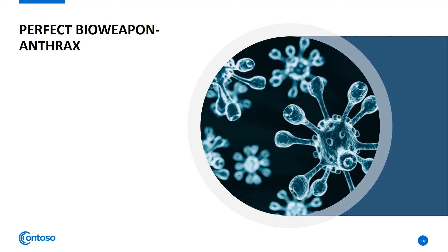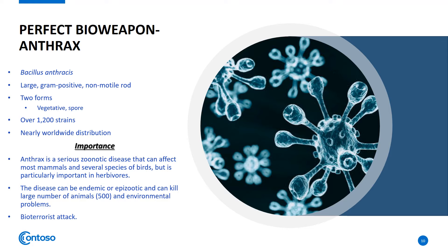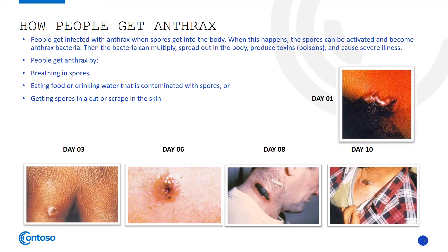The perfect Bio-Weapon till now is Anthrax. Anthrax is a serious zoonotic disease that can affect most mammals and several species of birds, but is particularly important in herbivores. People get Anthrax by breathing in spores, eating food or drinking water contaminated with spores, or getting spores in a cut or scrape in the skin.